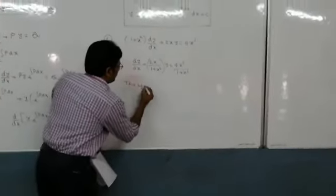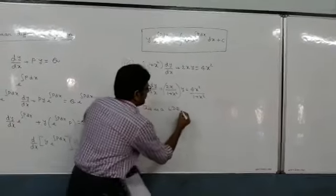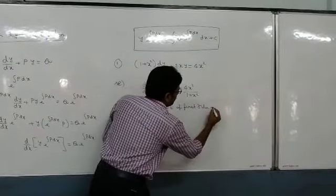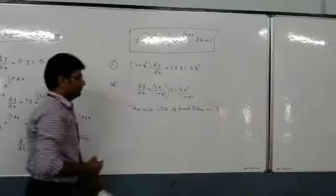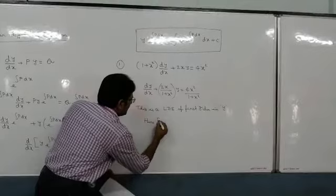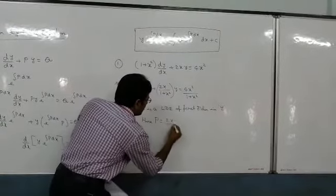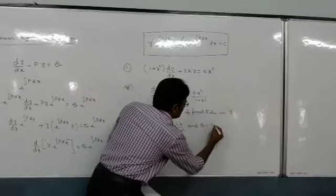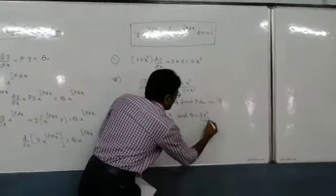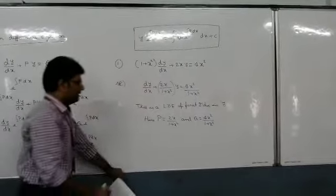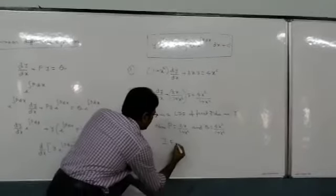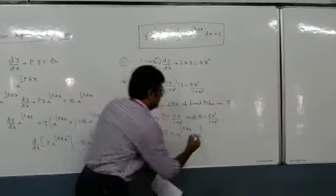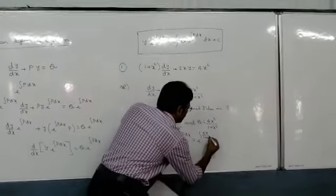This is a linear differential equation of first order in y. Here, P = 2x/(1 + x²) and Q = 4x²/(1 + x²). Now we calculate the integrating factor, which equals e^(∫P dx) = e^(∫2x/(1 + x²) dx).